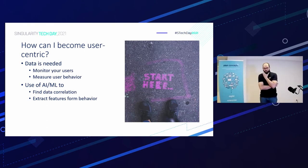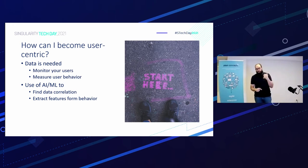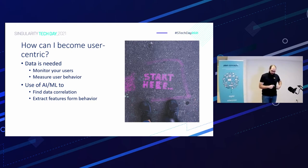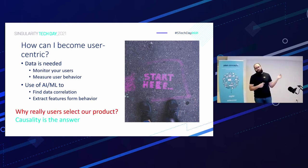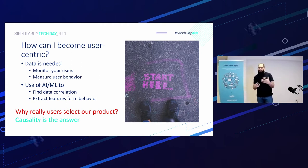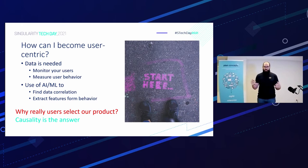To become user-centric we need a lot of data — we need to monitor our users, measure their behavior, test, analyze, and put these users in the loop. We also need to use AI and ML to extract correlations, insights, and analytics. But why do users really select a product? We can't know that using AI and machine learning alone; we need another kind of algorithm — that answer can be provided by causality.